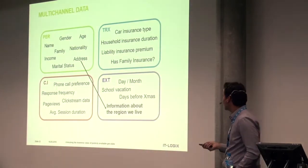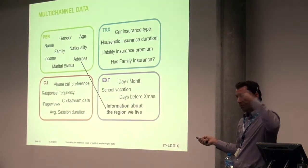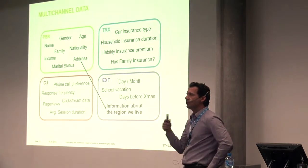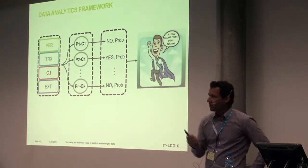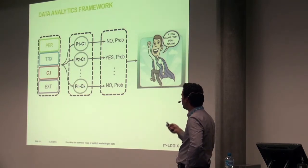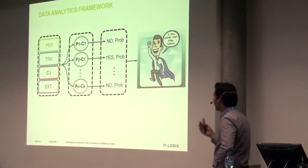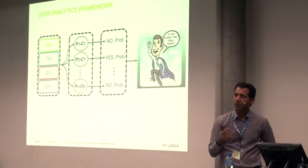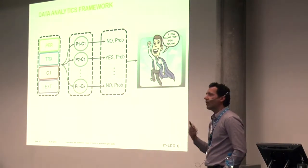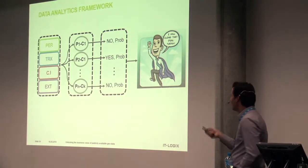And of course there is external data — calendar data can play an important role for marketing actions. But also all the external geodata described earlier, linked through the address of the person, tells us about the demographics of the region they live in. The overall framework is a multi-classification problem where you feed all data of a person into a set of classifiers for each product and compute the probability of whether the person would be interested in that product. The idea is to assist salespersons — not substitute them — by telling them through a system when to contact a person, how to contact them, and with what product.